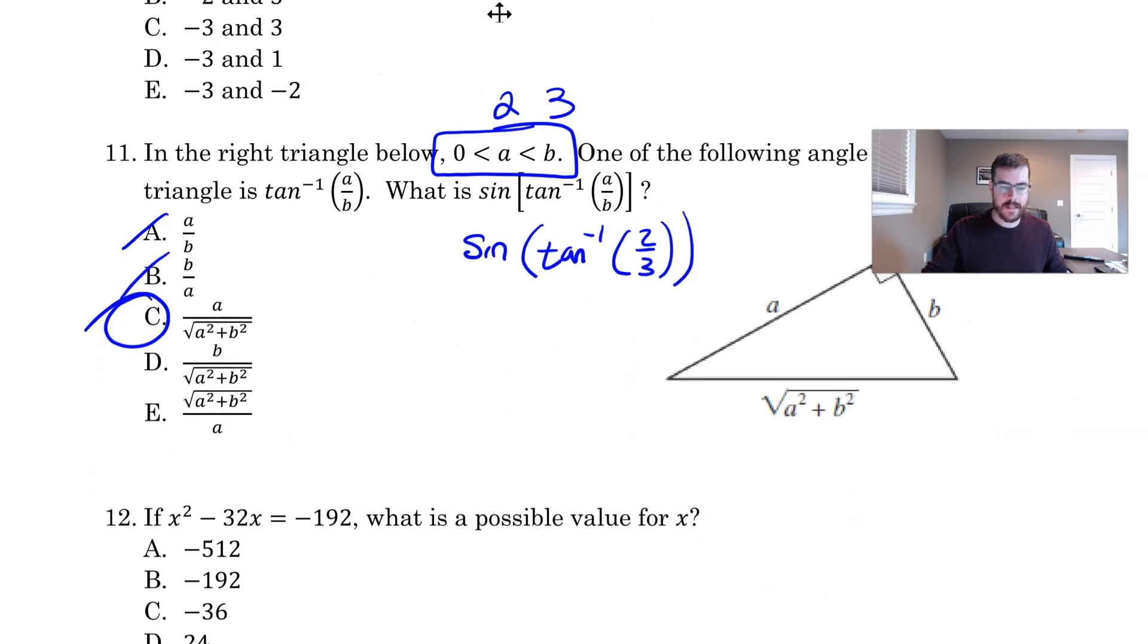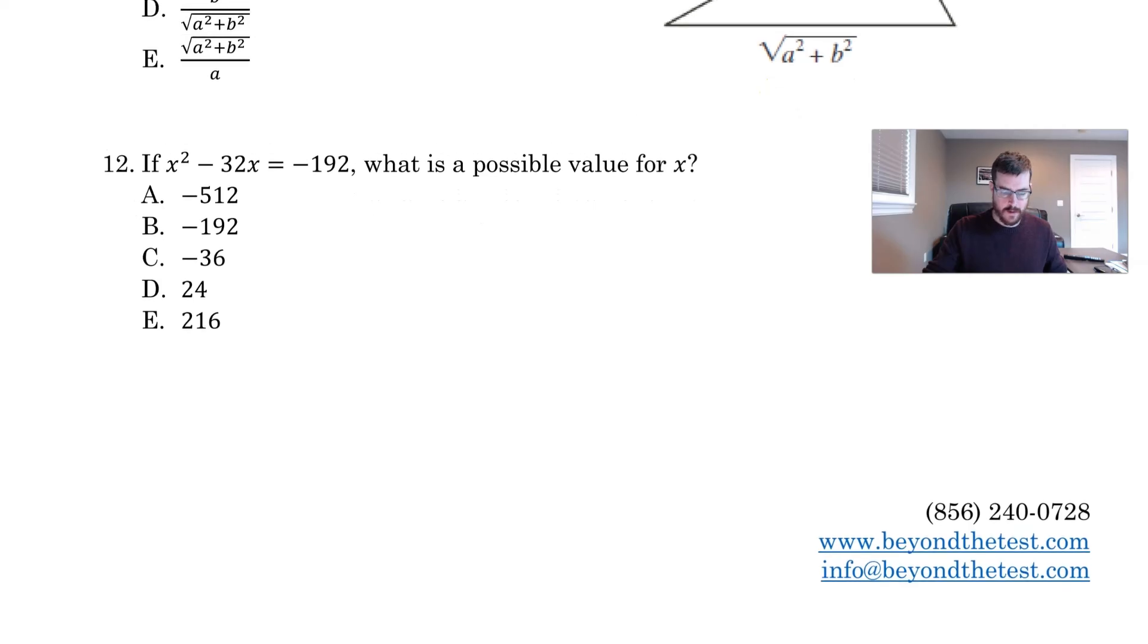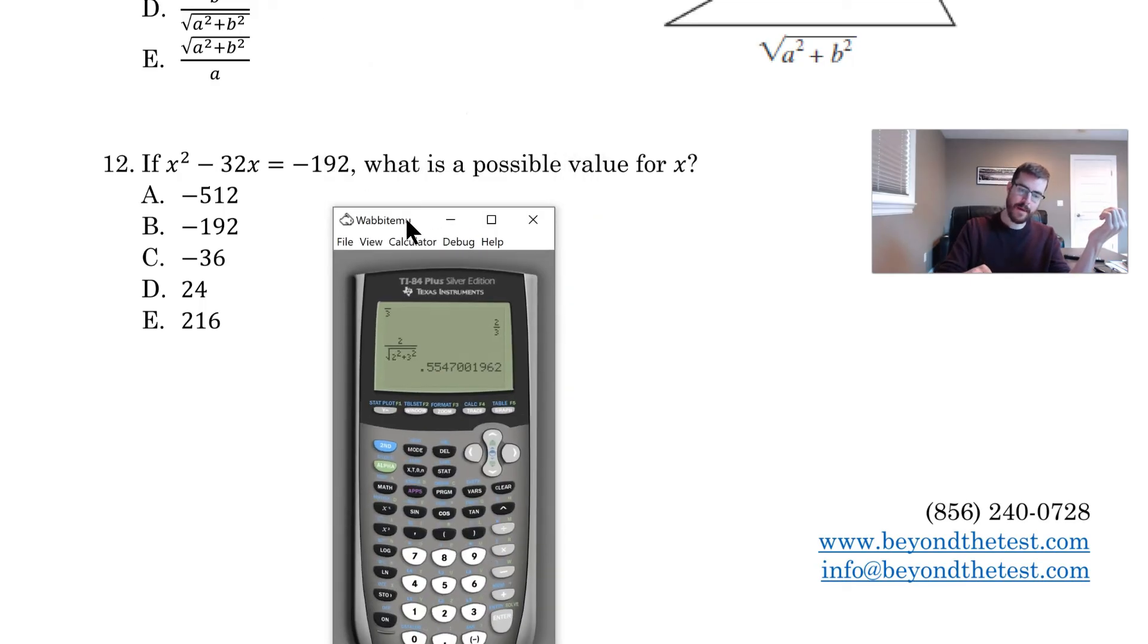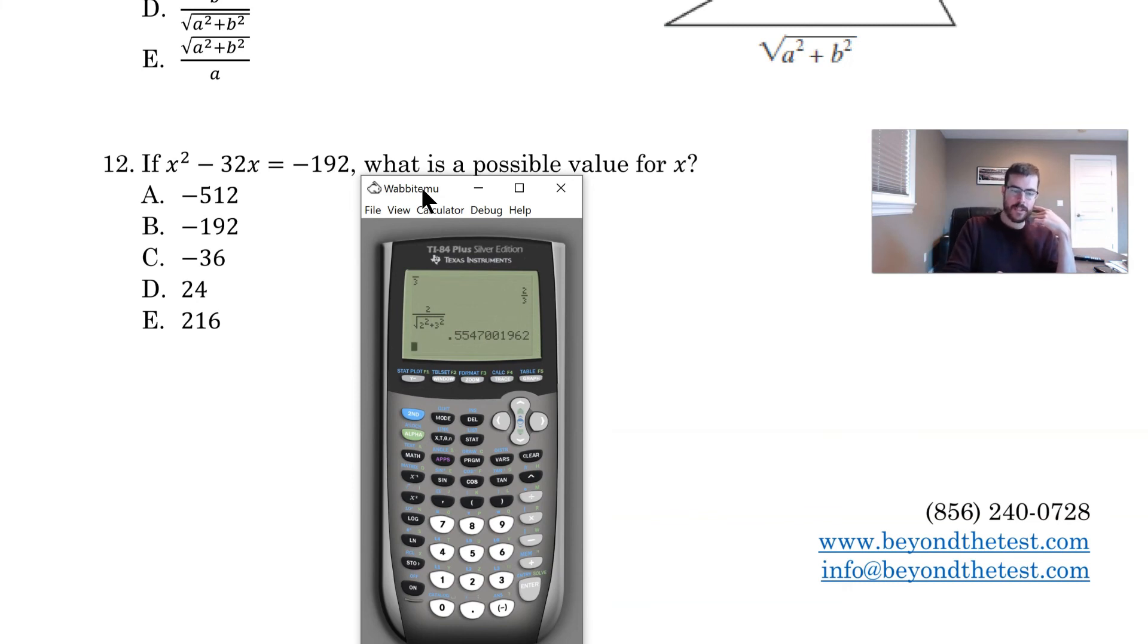And then the last one I want to talk about is actually number 12. So for number 12, it says if x squared minus 32x equals negative 192, what's a possible value for x? Now you could just go ahead and take your answer choices and sub them back in for x and see which one works, but I want to show you an even better trick for this. One thing I like to do is actually just go ahead and graph the equation in terms of x. So on the left hand side, it says x squared and then minus 32x. So what you can do in your calculator, once you have this typed in, is if you actually go to table set here, and you get to table set by hitting the second window button, you can change the independent variable to ask. So yours will say auto here. Just go ahead and change that to ask, and then pull up your table with second graph.